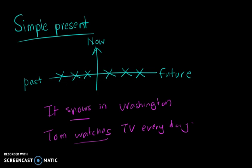That is why you see marks across this horizontal line, because it's trying to represent a situation where it always exists. For example, it snows in Washington. Tom watches TV every day. This is a habit, and it snows in Washington is an event that happens almost every year. This is how you look at the usage of simple present illustrated with the timeline diagram.